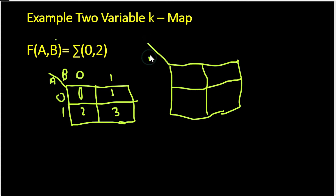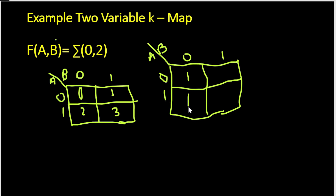A and B are my two variables. According to the given values 0 and 2, I will mark the corresponding cells with 1. So minterm 0 (A=0, B=0) gets a 1 here, and minterm 2 (A=1, B=0) gets a 1 here. Now I will combine these two cells into a group. Checking the group: the value of A is changing from 0 to 1, so A will be ignored. But the value of B remains 0 throughout this group.